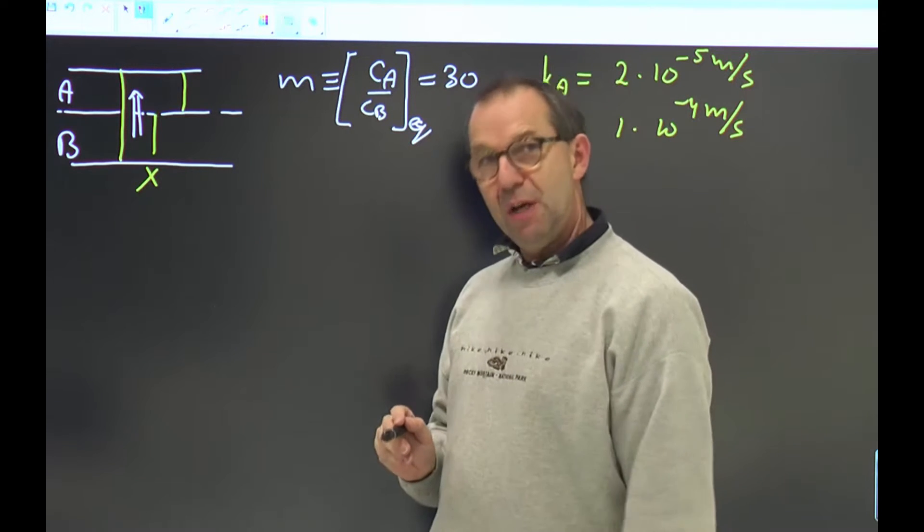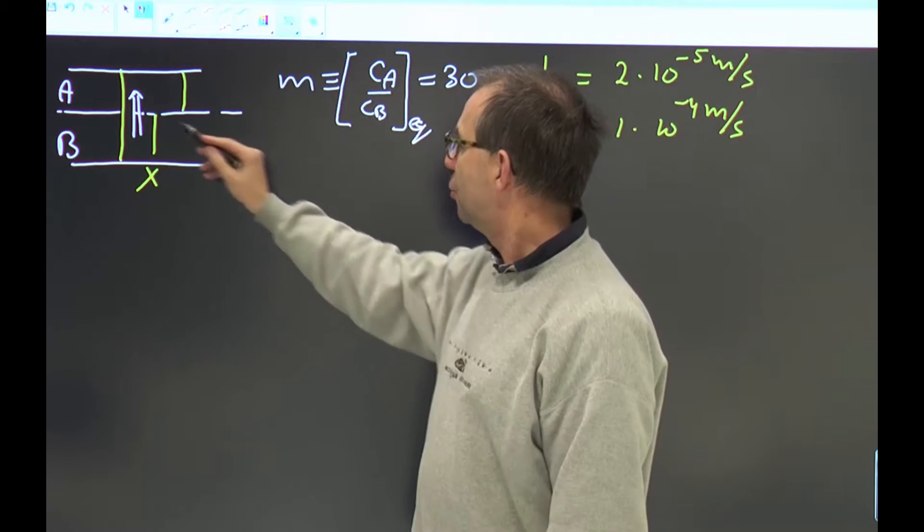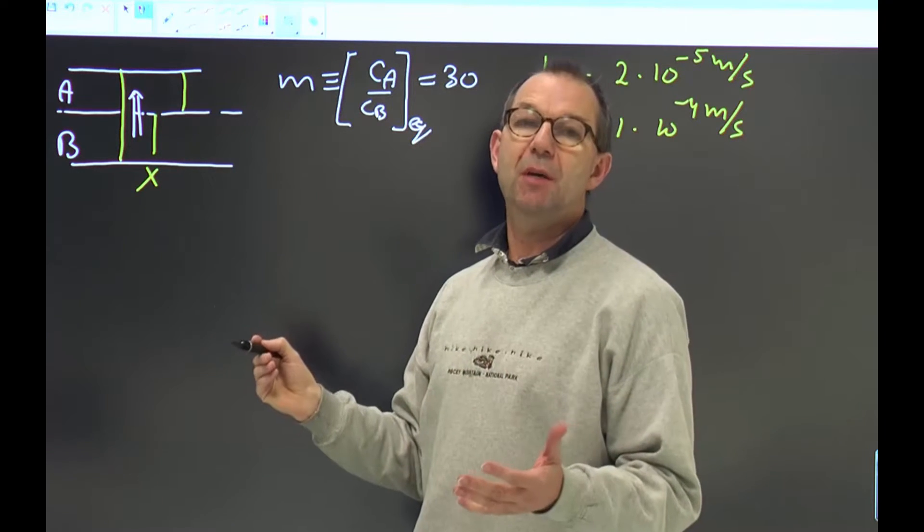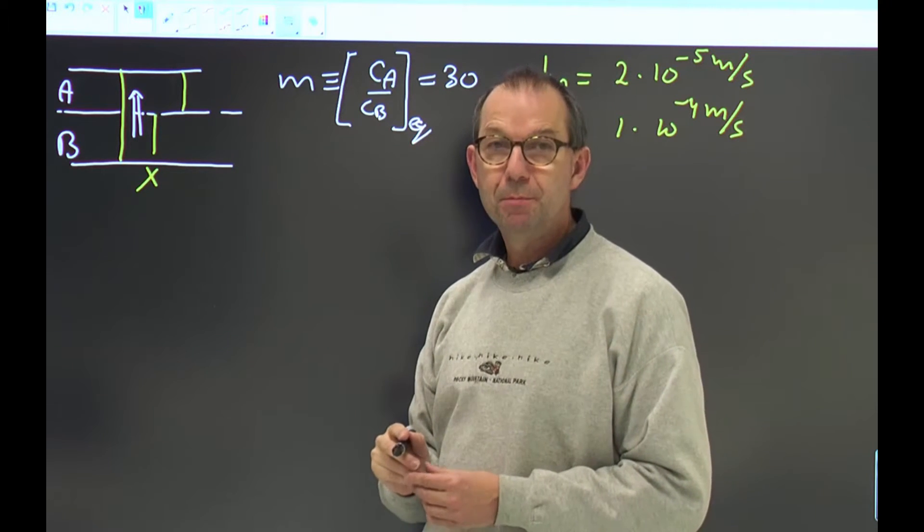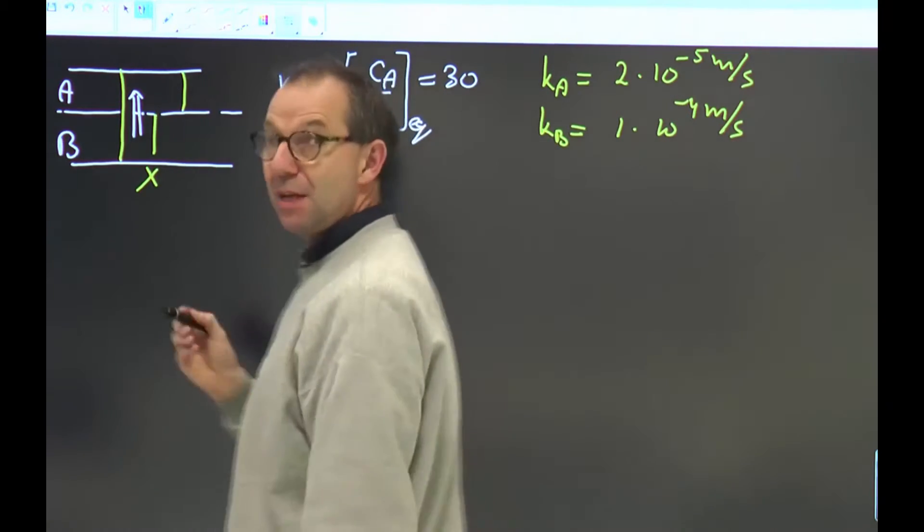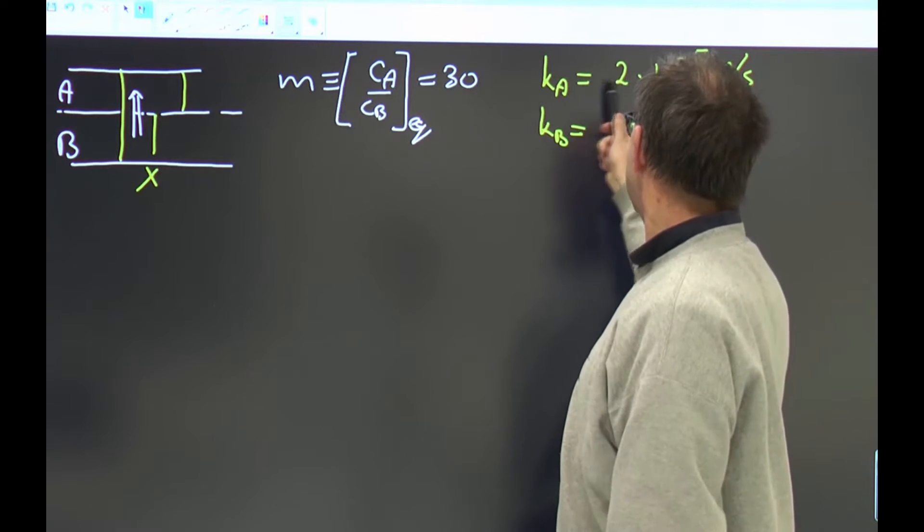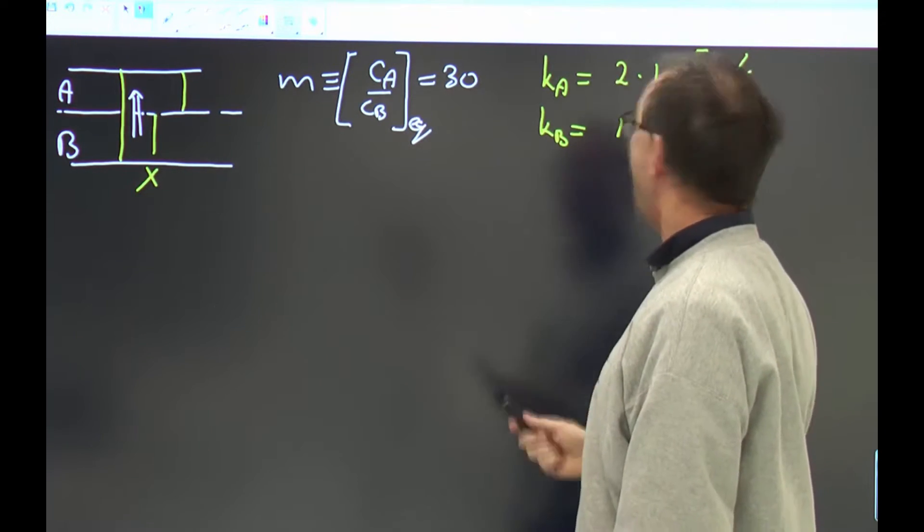We look at the same system but now we try to understand during the process of mass transfer from B to A, what can we say about the concentration profile in A or in B? Given is for this case that the mass transfer coefficients are not alike. In A it's smaller than in B, differs by a factor of 5.